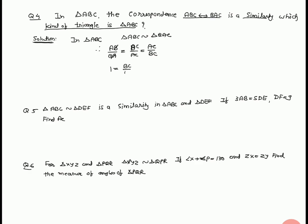Now AB upon AB equal to 1, therefore BC upon AC equal to AC upon BC, therefore AC squared equal to BC squared, so two sides are equal in triangle ABC. Therefore triangle ABC is isosceles.